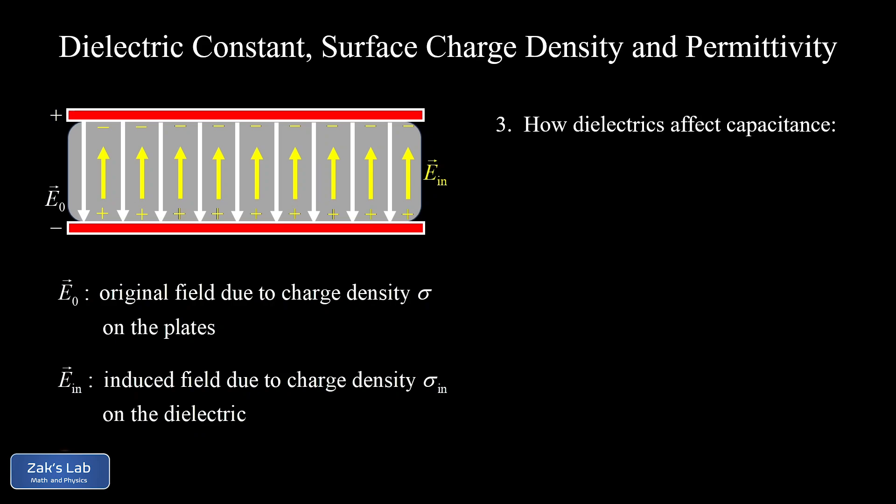Next, a quick note on how the presence of a dielectric affects capacitance. Capacitance is defined as charge per volt — Q over V — and our original capacitance was Q divided by V0, where V0 is the original voltage we charged it up to with our battery. The original potential difference between the plates before inserting the dielectric was given by E0 times d — with the electric field being constant, this becomes a simple product E0 times d.